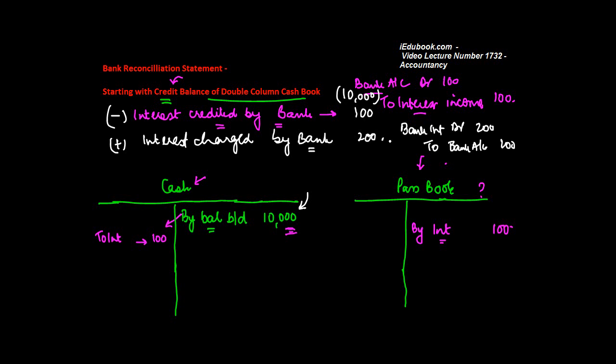Now if you were to post this entry into your cashbook or bank account, you would have by bank interest and you would have credited by 200. So now what are you doing? You are basically increasing this balance. So what will you do? You will add it to your negative balance of bank reconciliation statement.